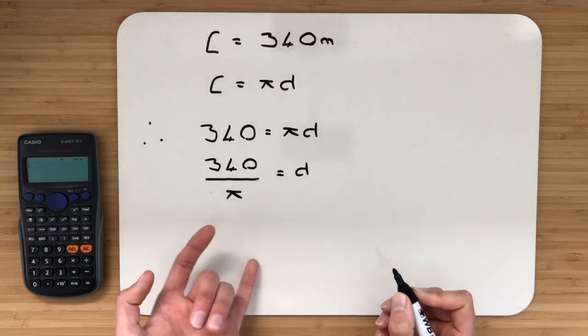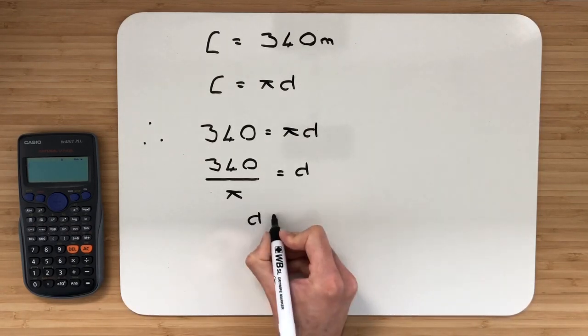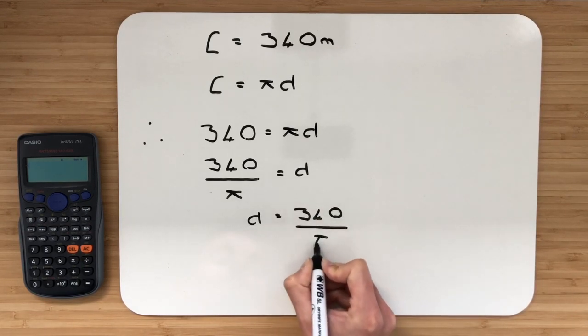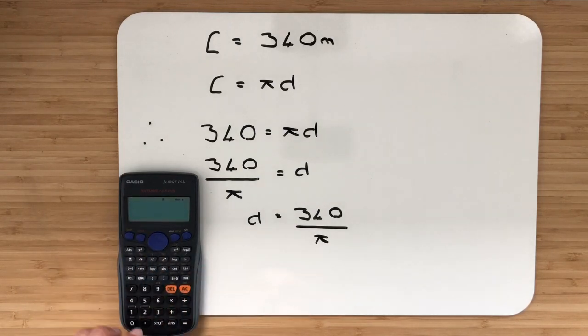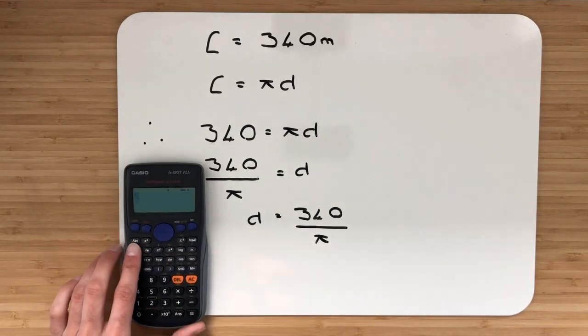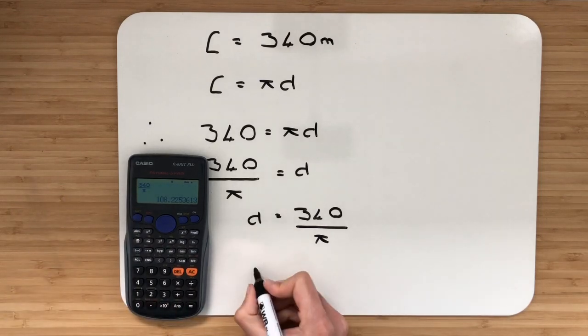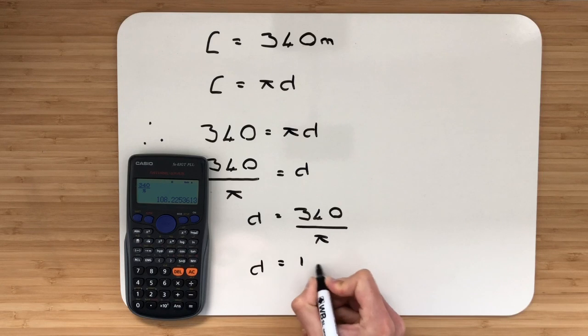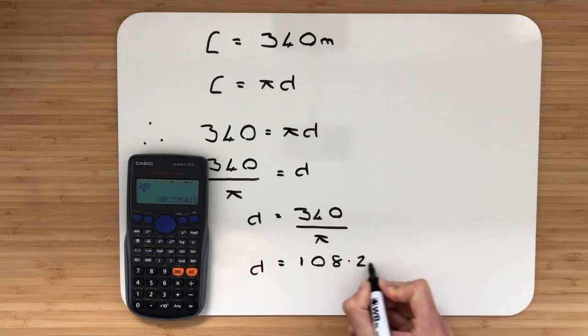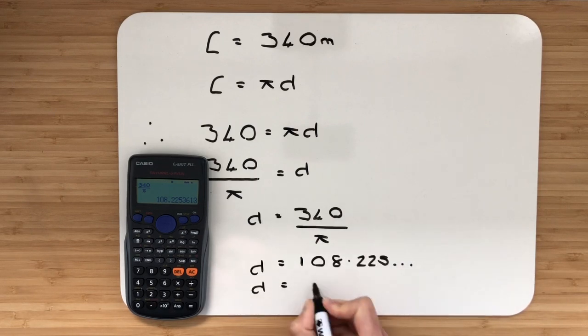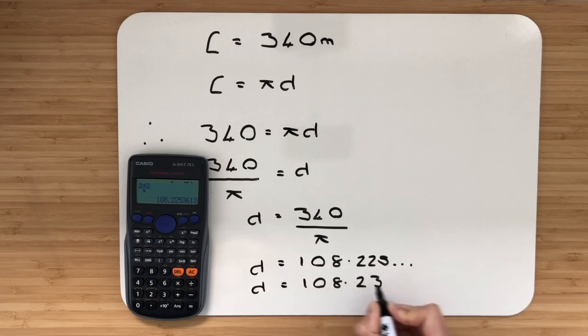I can write d is equal to 340 over π. Let's type this into the calculator, so we'll press the fraction button and then we've got 340 divided by π. So we have diameter is 108.225 and that keeps going. So the diameter to two decimal places will be 108.23 metres.